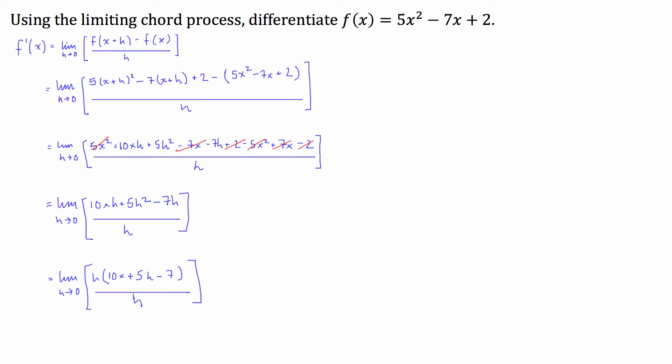h outside of 10x plus 5h minus 7 over h. And then what's going to happen is our h's will cancel like this.